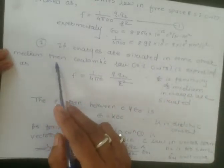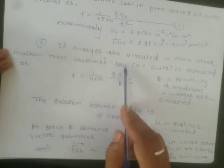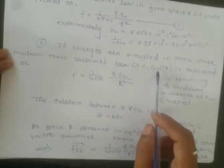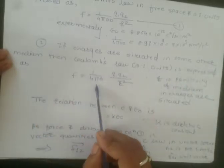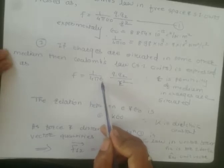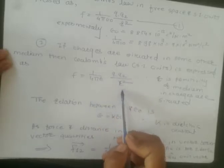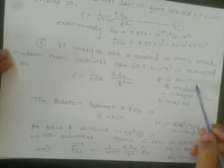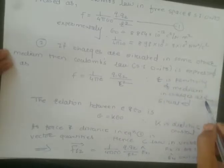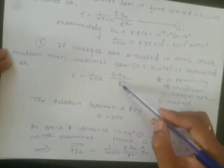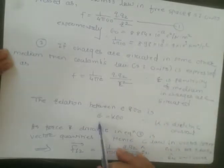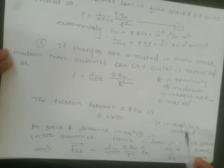If the charges are situated in some other medium, then Coulomb's law expressed in SI units is: F = (1/4πε) · q1·q2 / r², where ε is the permittivity of the medium in which the charges are situated. The relation between ε₀ and ε is: ε = k·ε₀, where k is the dielectric constant.